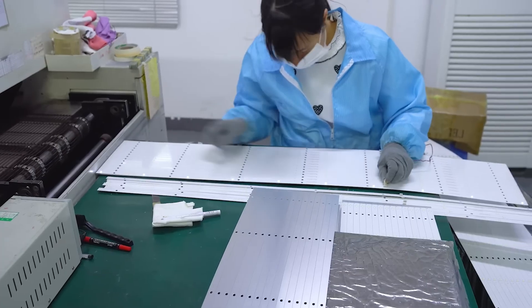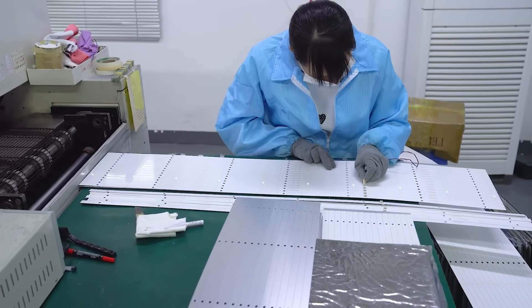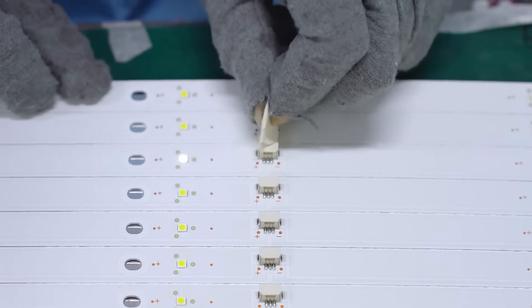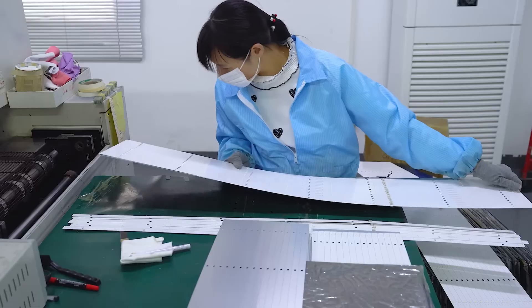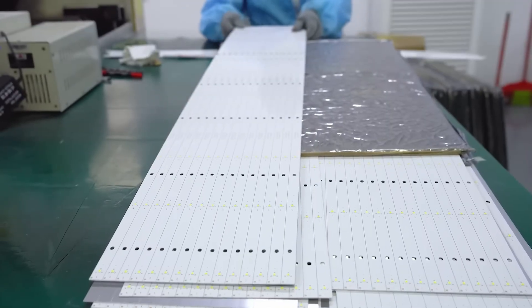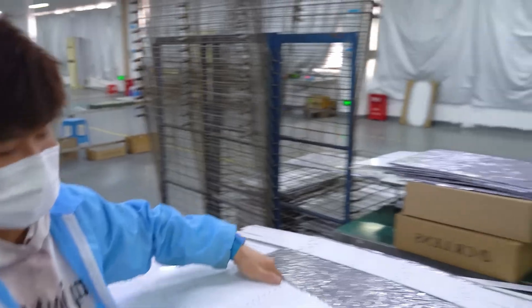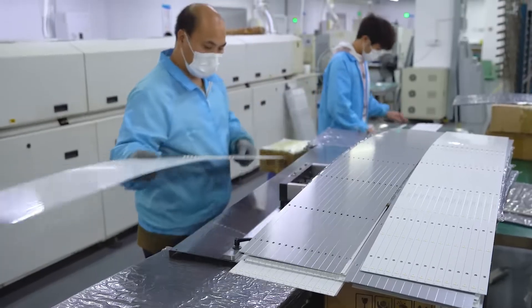The LEDs are then connected to electrical contacts that will power them. To produce white light, a phosphor coating is often applied to the blue LED chips. When the blue light from the LED passes through this phosphor layer, it converts some of the light to yellow, combining to create white light. The exact composition of the phosphor determines the color temperature and quality of the white light.